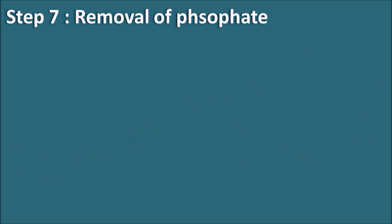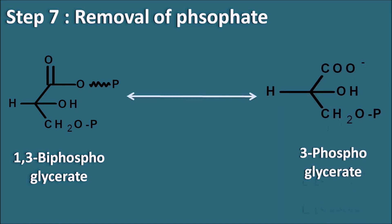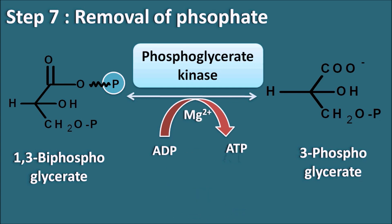Step 7 is the removal of the phosphate group. From 1,3-bisphosphoglycerate, the phosphate group is removed to form 3-phosphoglycerate. This step is mediated by phosphoglycerate kinase, and the phosphate is released as an ATP molecule, with magnesium as cofactor. This is the first step in glycolysis where ATP is released at the substrate level.